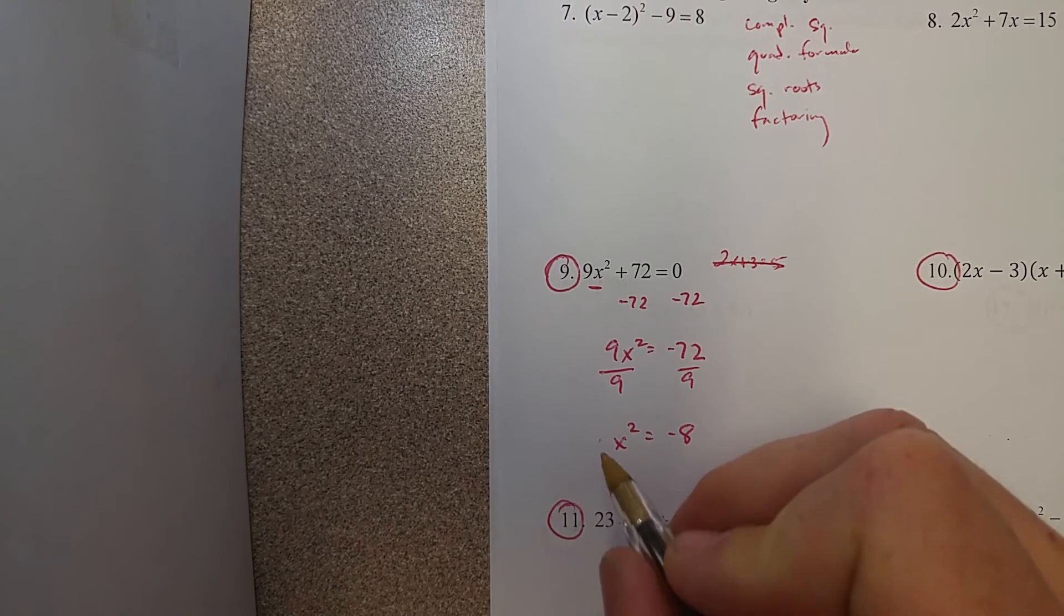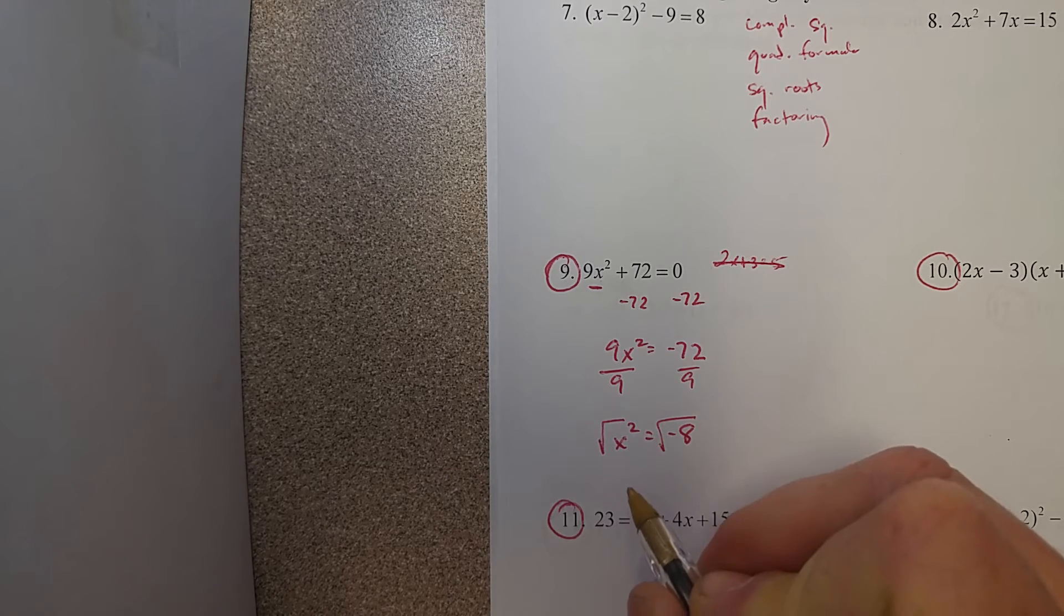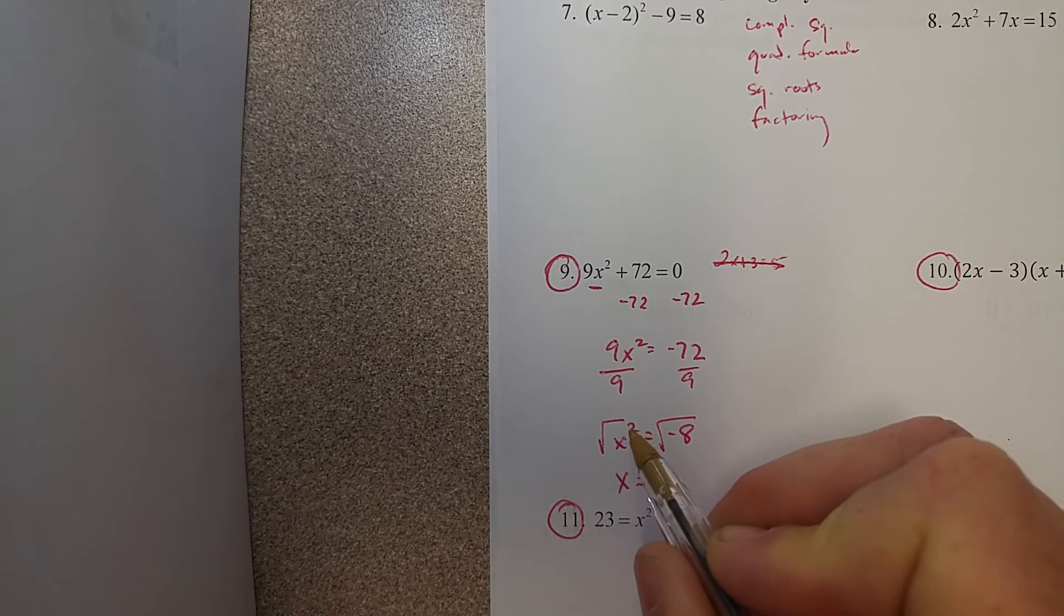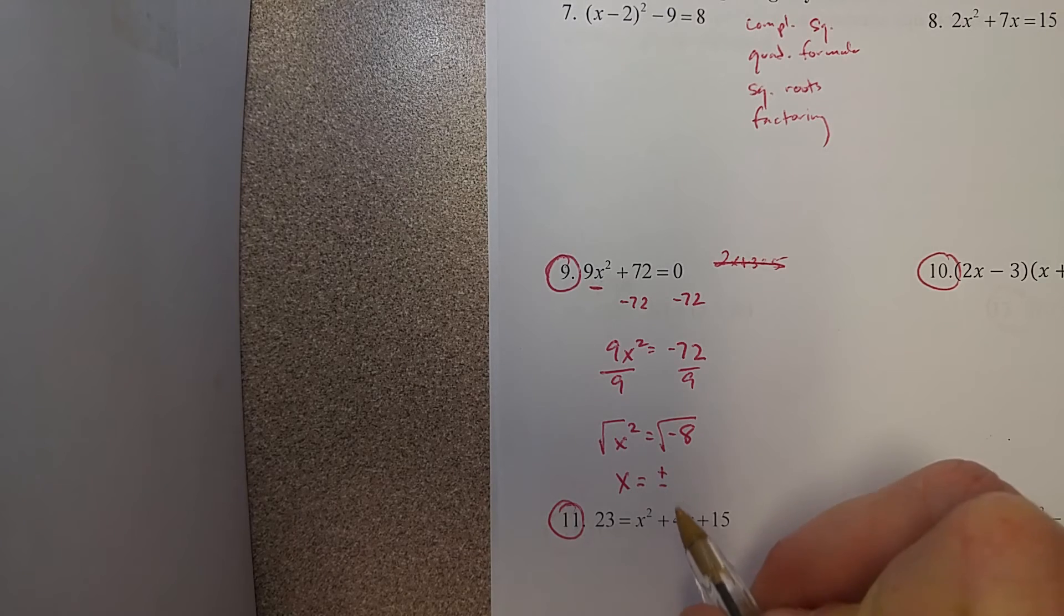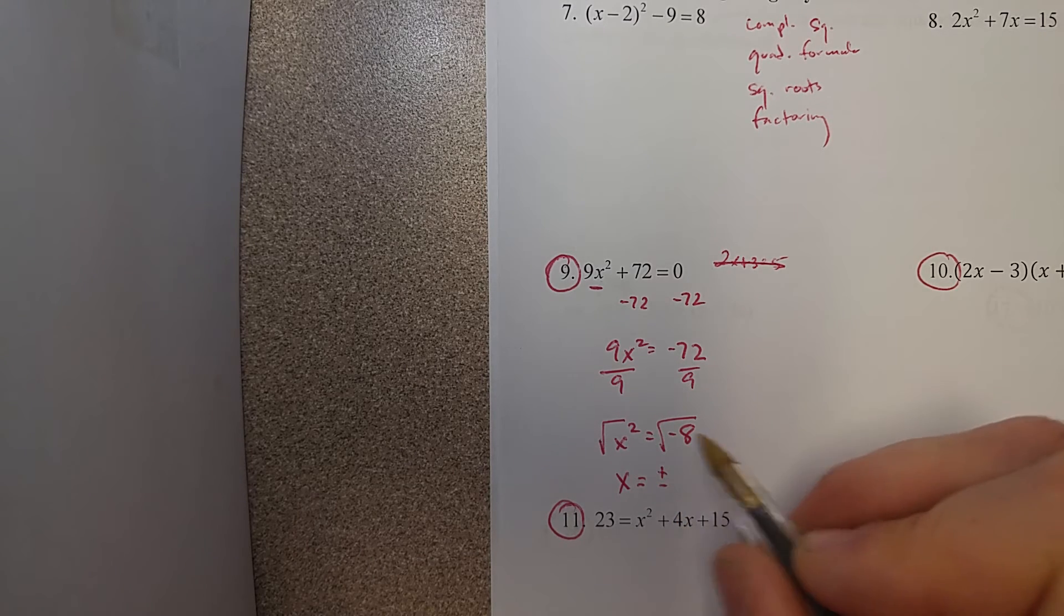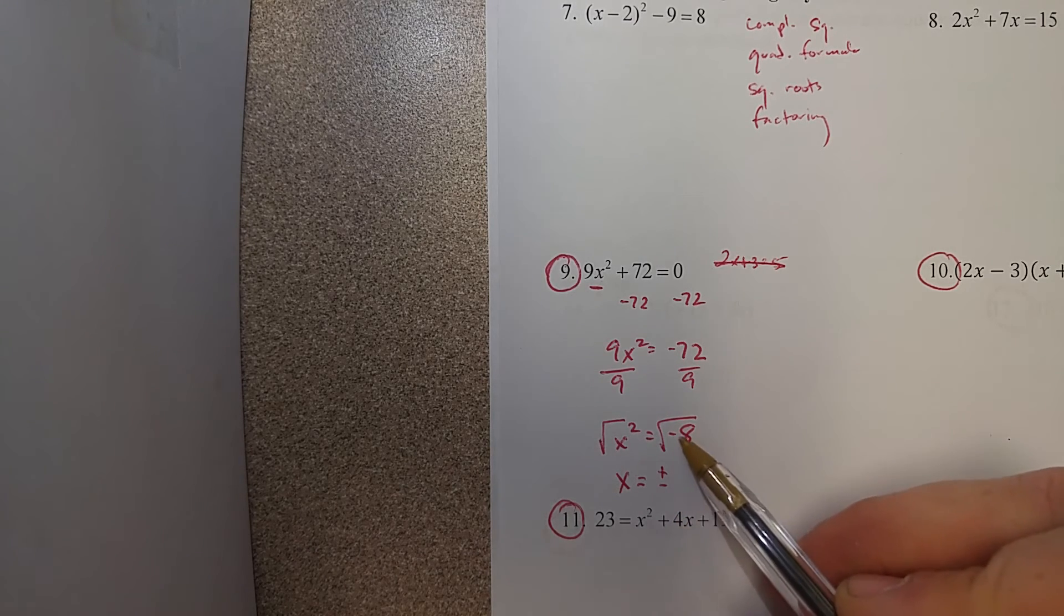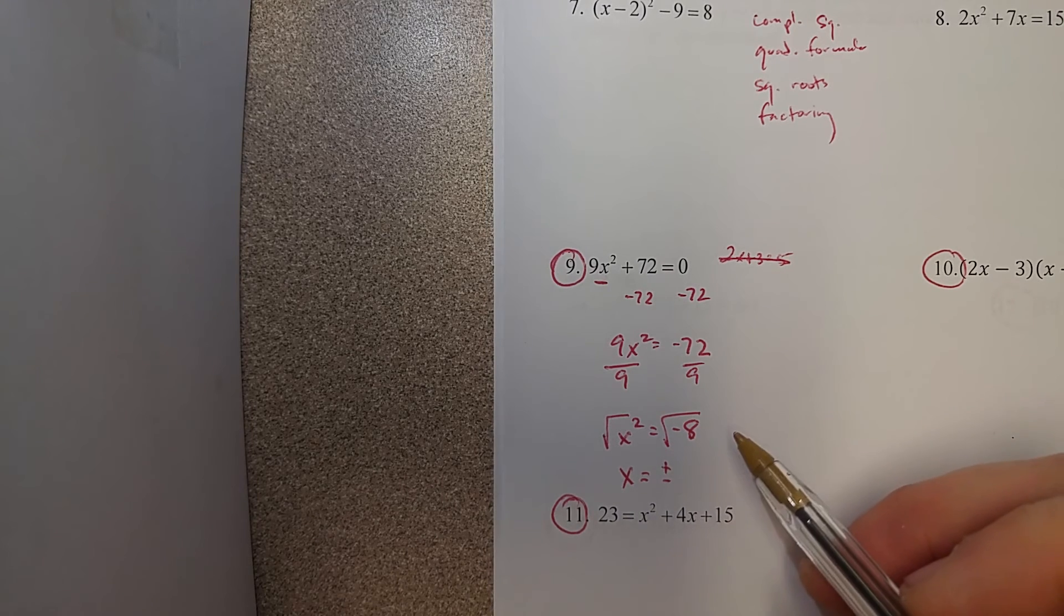Now to undo the squared, we're going to take the square root of both sides. So we get x, and remember when you take the square root of x squared, you get a plus or minus. It could be either positive or negative. The square root of negative 8 is going to require some simplifying.